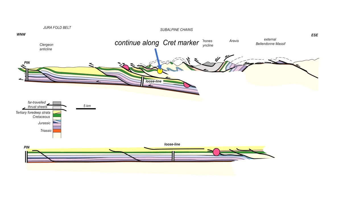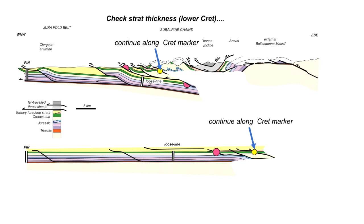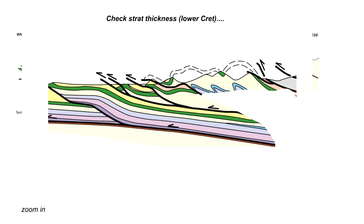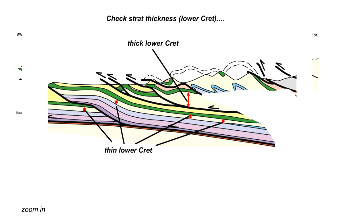Continuing along the dark green marker in the hanging wall to the thrust appearing at Annecy, we identify its location on the restored section. We need to check the stratigraphic thickness of the underlying Cretaceous rocks by zooming in. In the structures restored so far, the lower Cretaceous beneath the dark green marker is a pretty much consistent thickness throughout. But going into the overriding thrust sheet, the distance from our Cretaceous marker down to the thrust is significant — there is a thick lower Cretaceous succession. This is not just an artifact of interpretation; it is supported by measured sections from outcrop. So as we go into the subalpine chains, the lower Cretaceous has become significantly thicker.